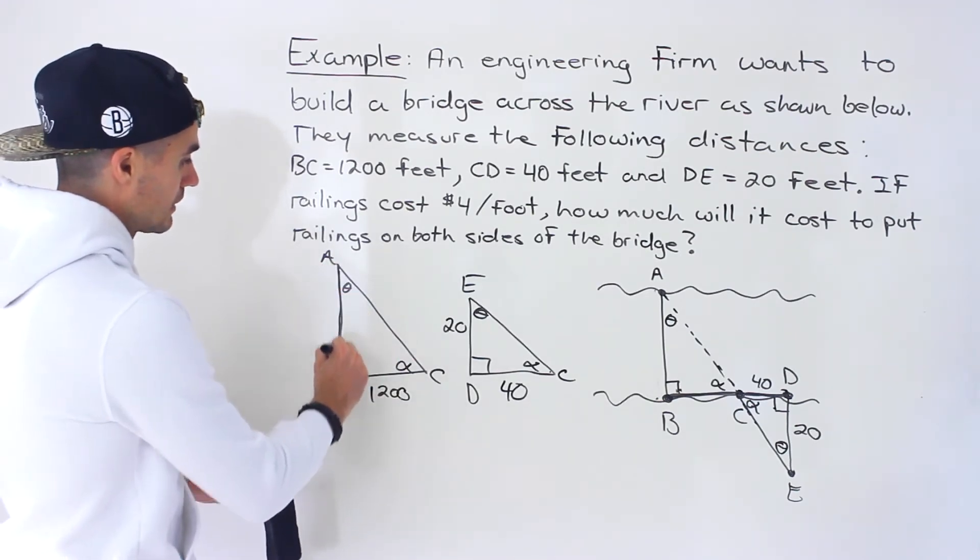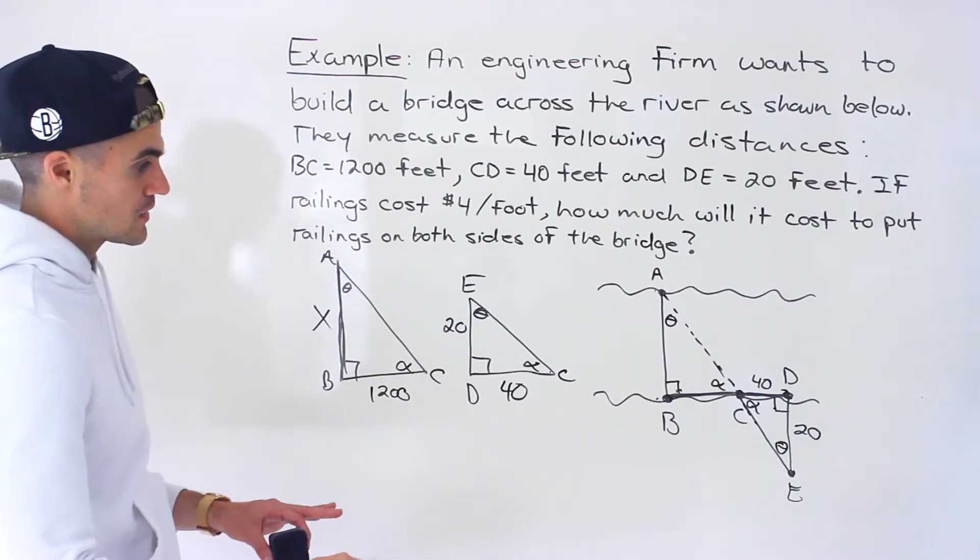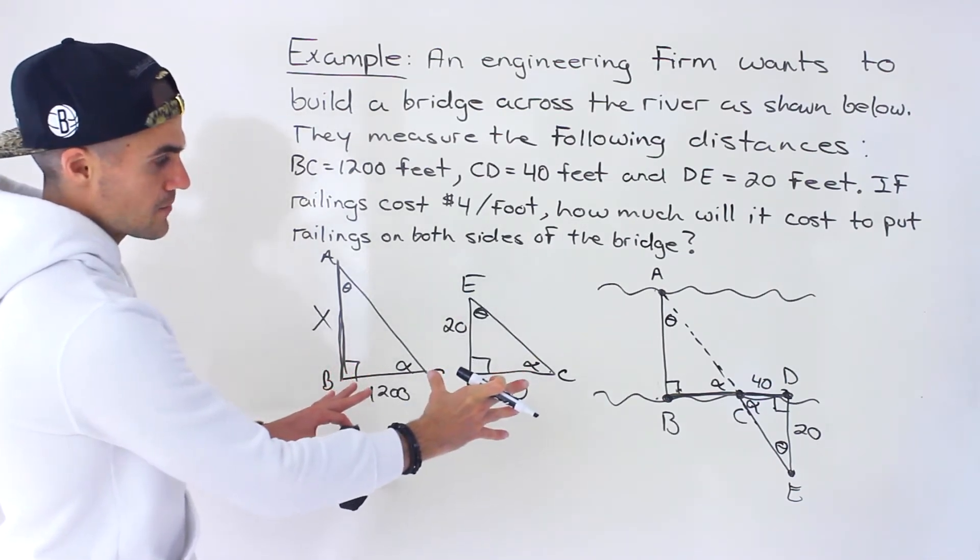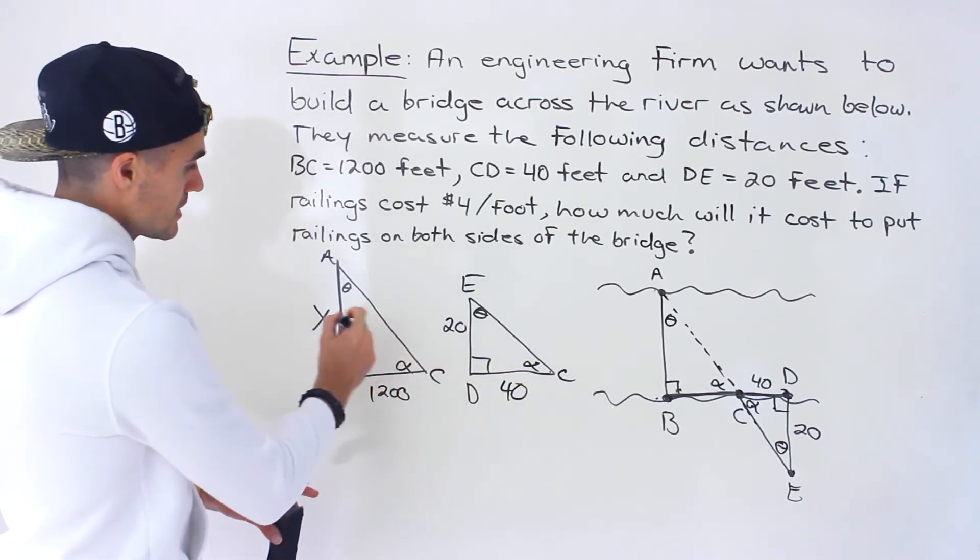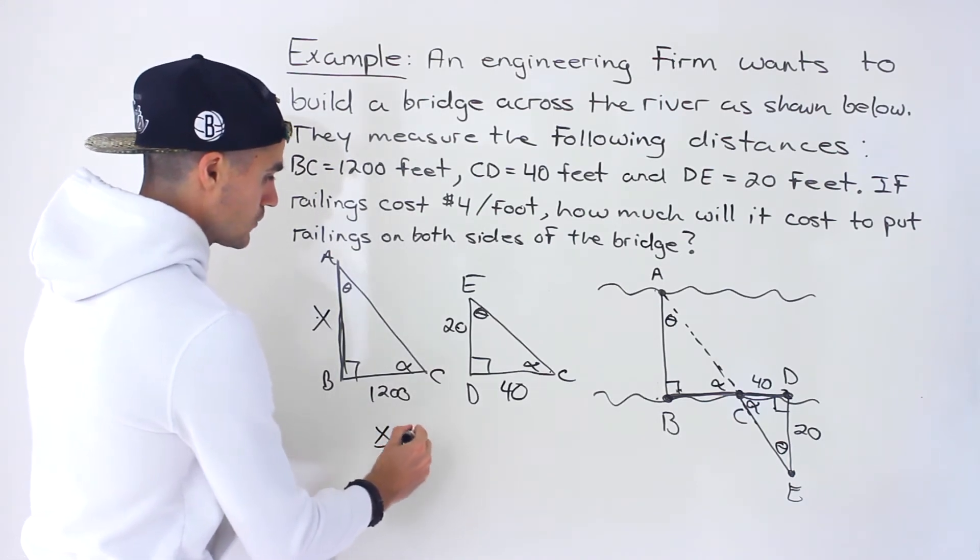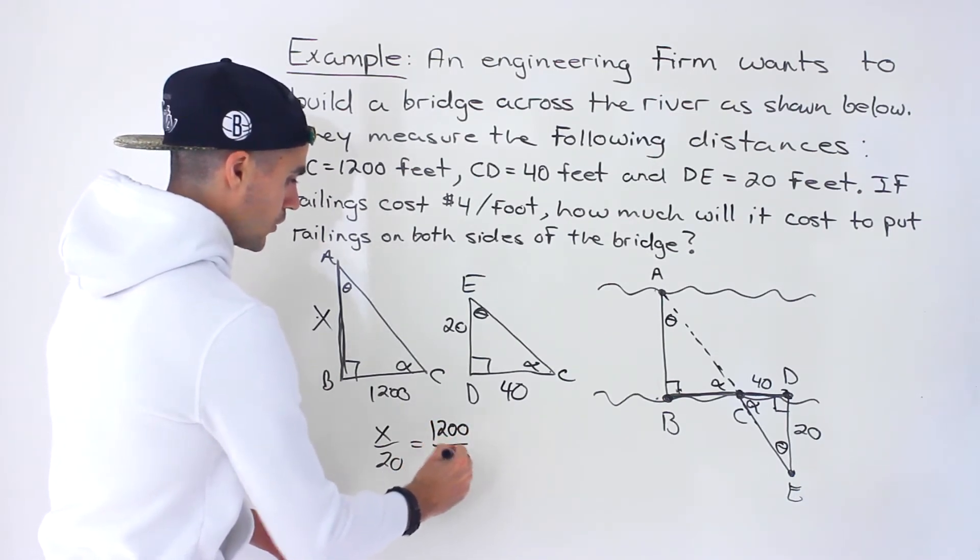Now that we line the triangles up like this, it's easy to tell we're trying to find the length of the bridge, so we're solving for this x value. Notice we could use ratios here because both triangles are similar. We could take x over 20 and make it equal to 1200 over 40.